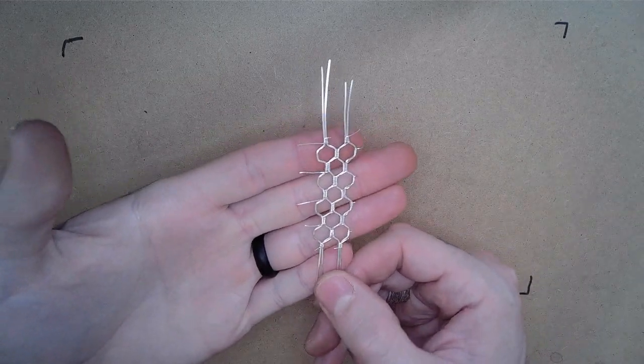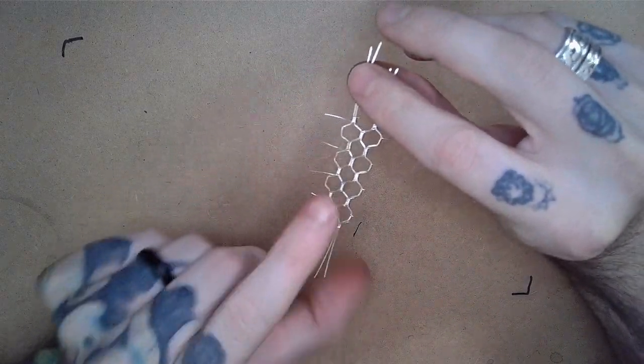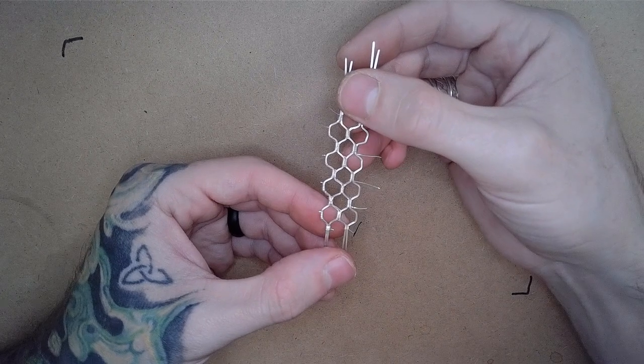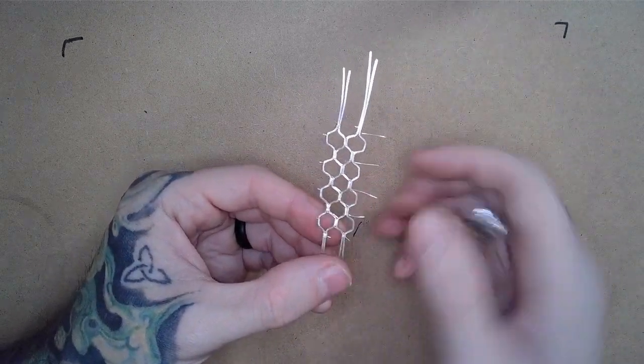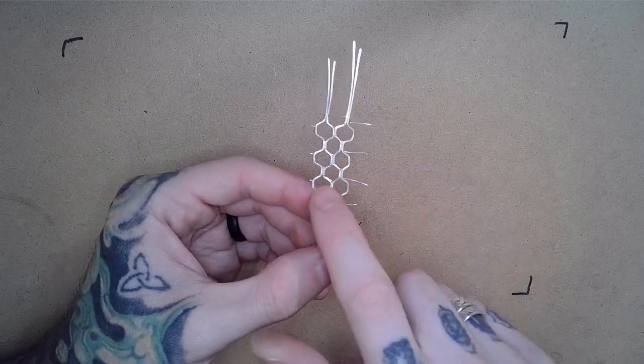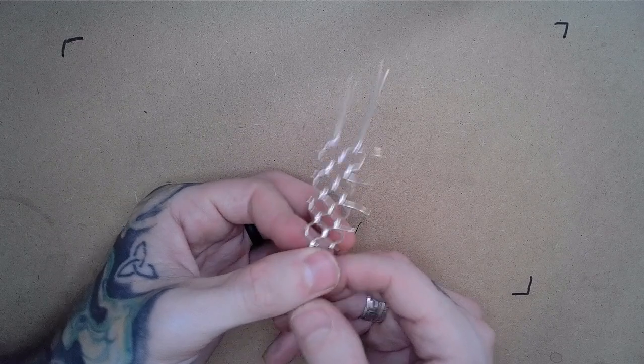Once I have woven all of the individual connections together, I can flip it over to see from the other side. All of my crossovers from my 28 gauge should be hidden behind one of my squares, and it looks nice and neat.